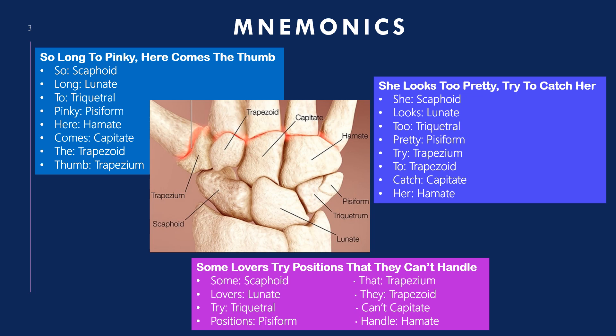Here are some mnemonics to remember the carpals. One option is 'So Long To Pinky, Here Comes The Thumb.' You say the carpals in a circle, starting at the scaphoid, going left to right along the bottom row, then looping right to left on the top. The other two mnemonics start at the scaphoid on the bottom row left to right, then go to the top row left to right. Use whichever works for you.